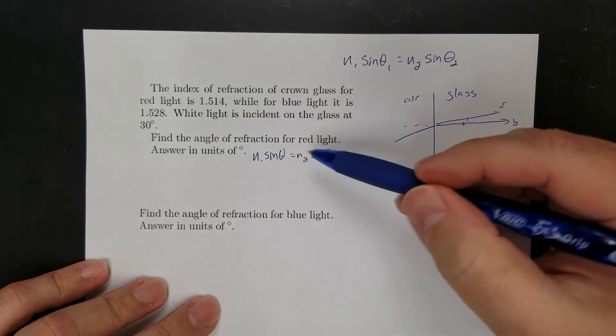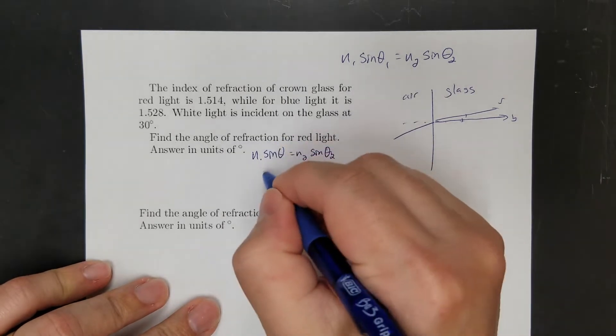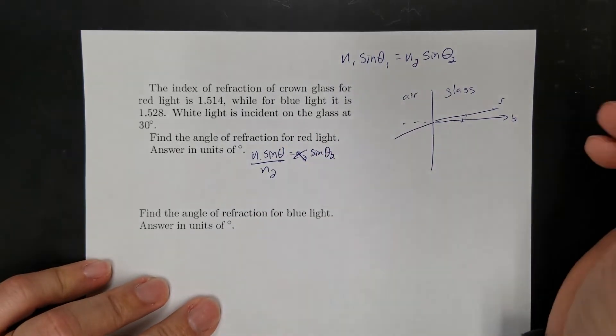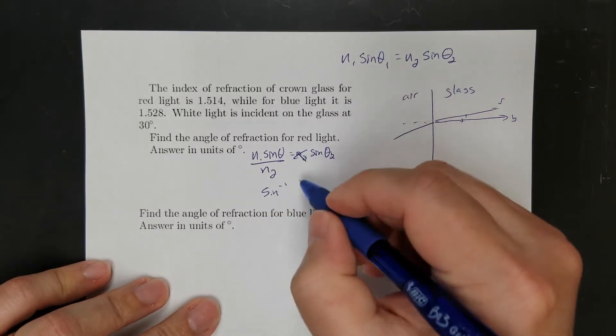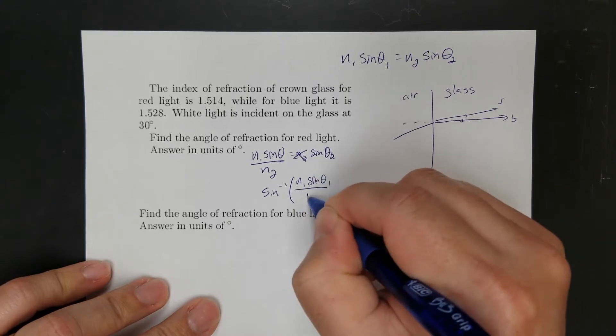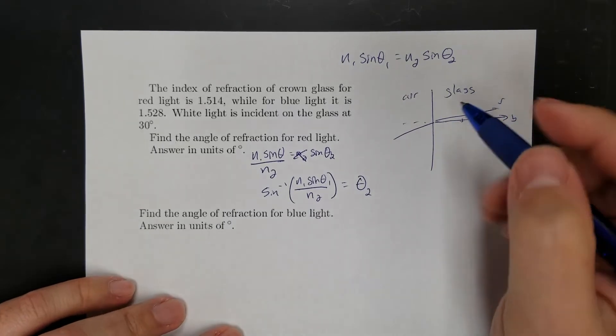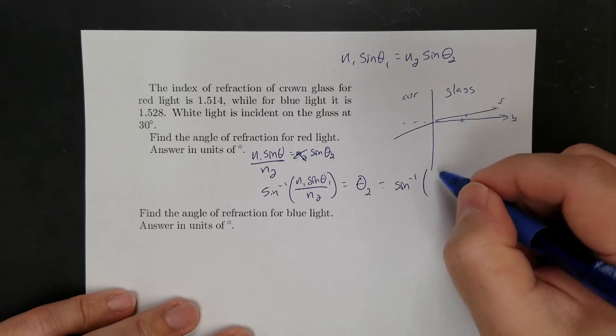Okay, so let's start with Snell's Law. So there's Snell's Law. I need to solve for theta 2. So I can divide over N2. So divide by N2, that cancels it out over here. And then if I take the arc sine of this whole side, N1 sine theta 1 over N2, that'll leave me with theta 2.